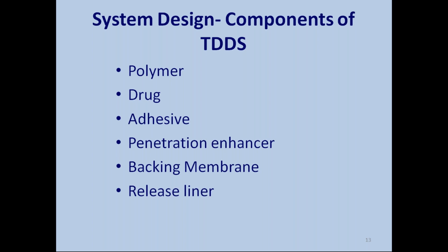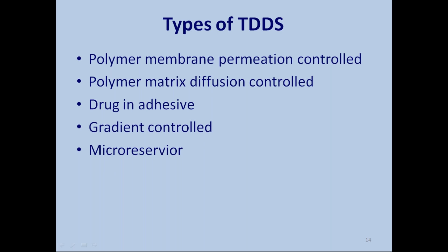So before applying a bandage, there is a liner — something like a butter paper — which you remove and then apply the bandage. The medicament is present just below the release liner. These are the basic components. Now, the types of transdermal drug delivery systems.